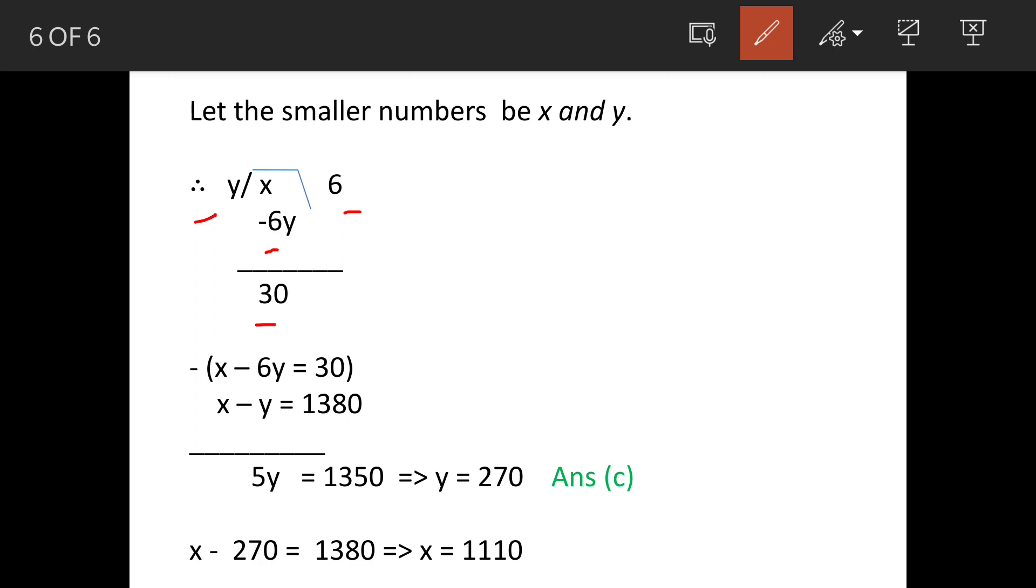As per the question, the remainder is 30, so we can say x minus 6y equals 30. The other condition given in the question is x minus y equals 1380. So we can solve these two equations.